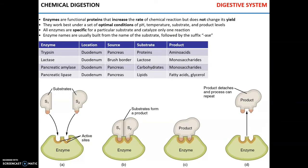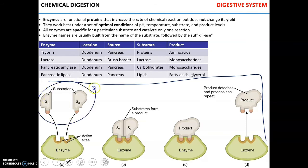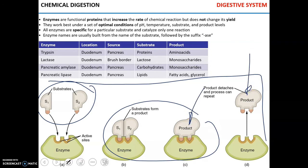Enzymes are proteins that increase the rate of chemical reactions. They do not change the yield of the chemical reaction. Enzymes work best under certain conditions — a certain pH, temperature, and levels of substrate and product. They are fantastically specific for a particular substrate and catalyze only one reaction.